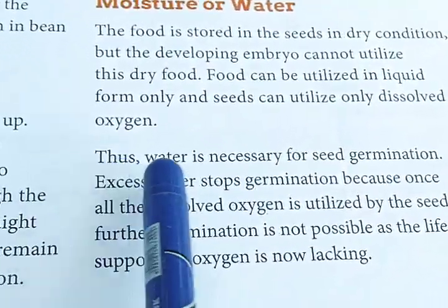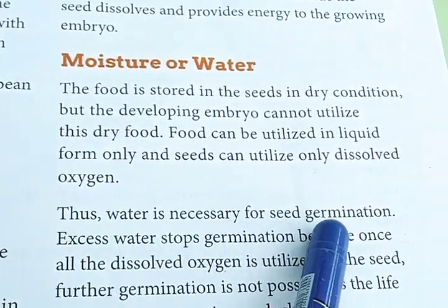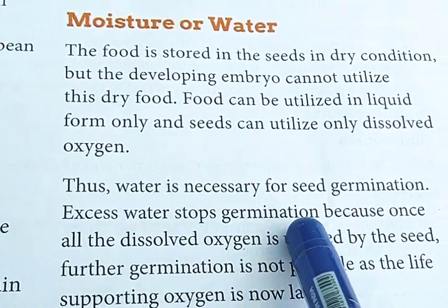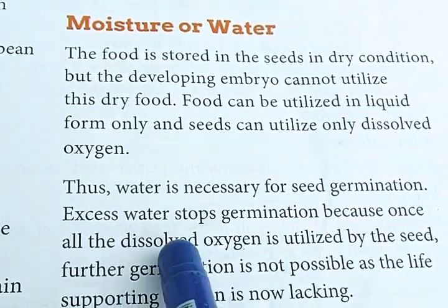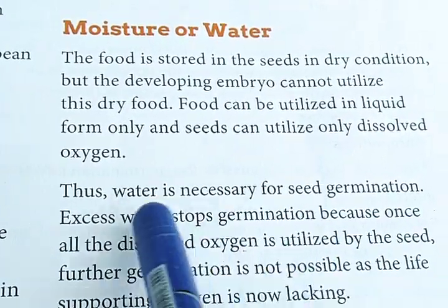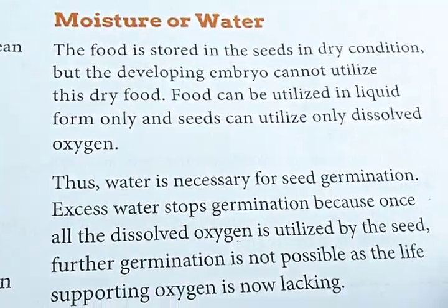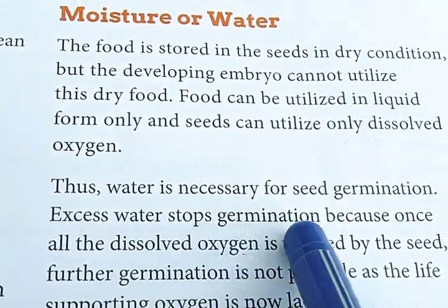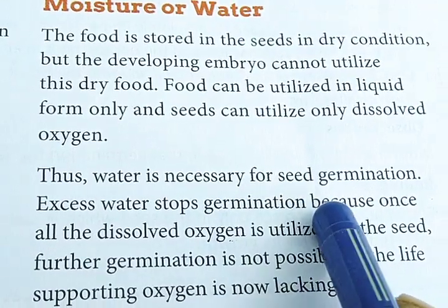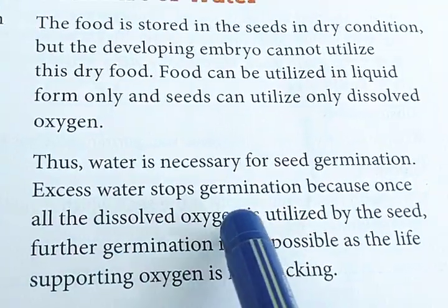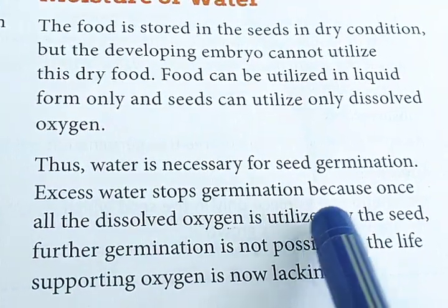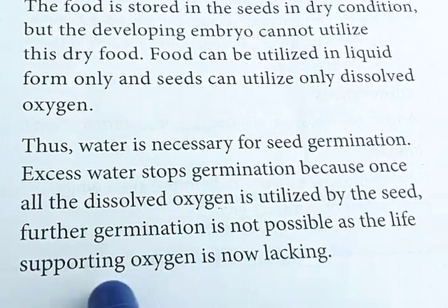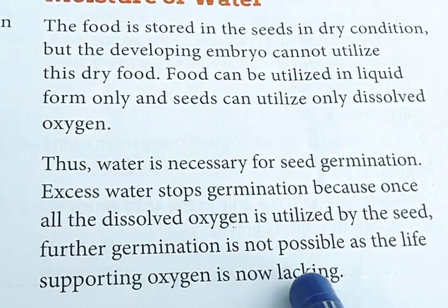Thus water is necessary for seed germination. Excess water stops germination — please underline this. Water is necessary for seed germination, but excess water stops germination. Why? Because all the dissolved oxygen is utilized by the seed, and further germination is not possible as the life-supporting oxygen is now lacking.